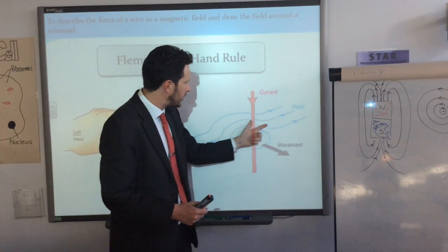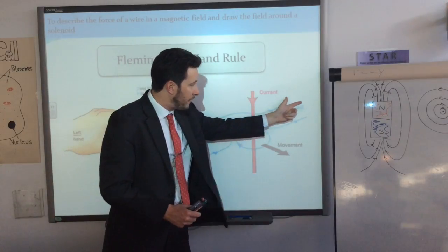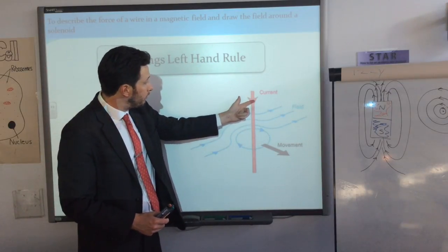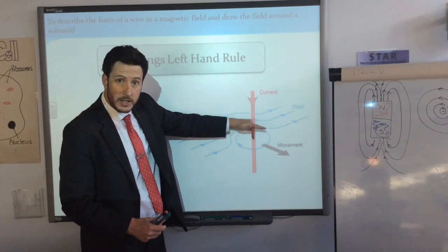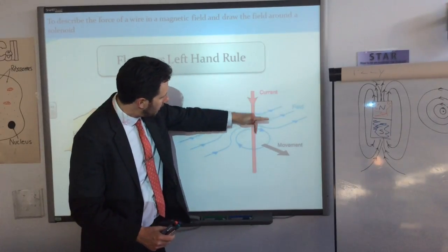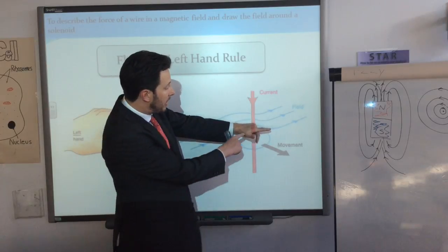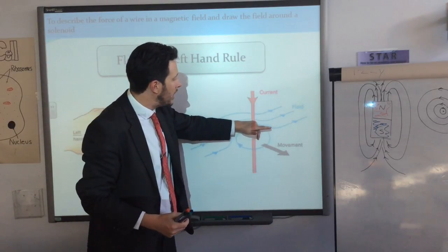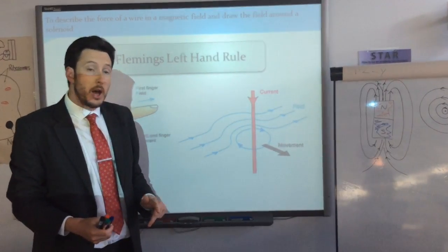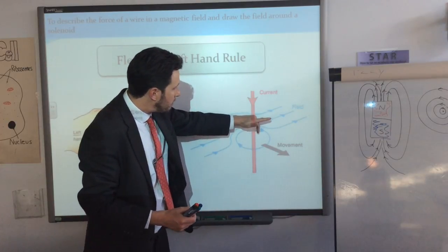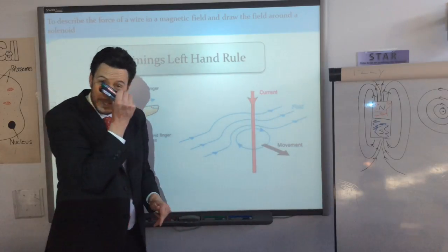In this example the field is going across in this direction, so I place my first finger in the direction of the field. The current is moving downwards, so I place my second finger pointing down. With the field going across and the second finger pointing down in the direction of the current, my thumb is now pointing out towards you on the camera — meaning the movement or motion is towards you.